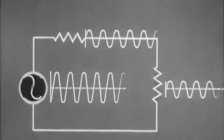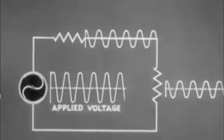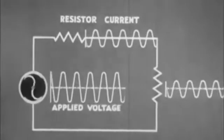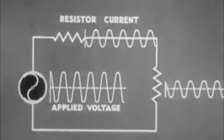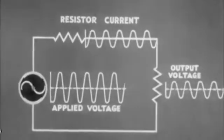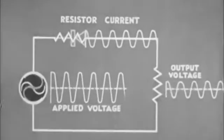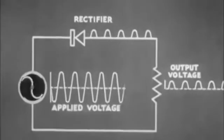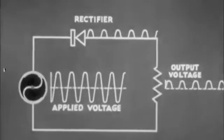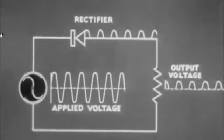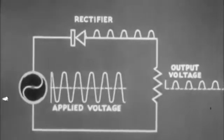When an alternating voltage is applied in a circuit having one or more resistances, the current through the resistance is alternating. The output voltage is also alternating. If a crystal rectifier is substituted for the resistance, only half of each wave can pass. The output current and voltage are pulsated.